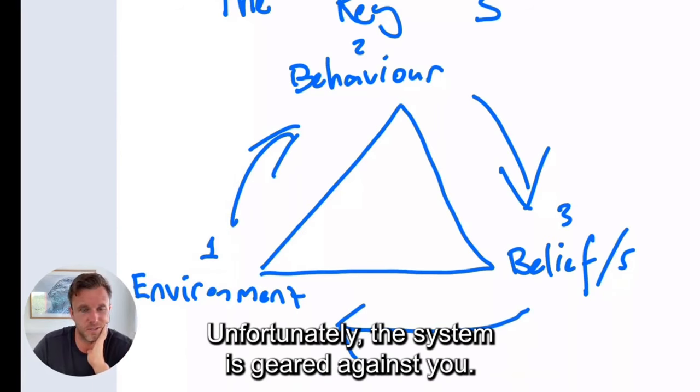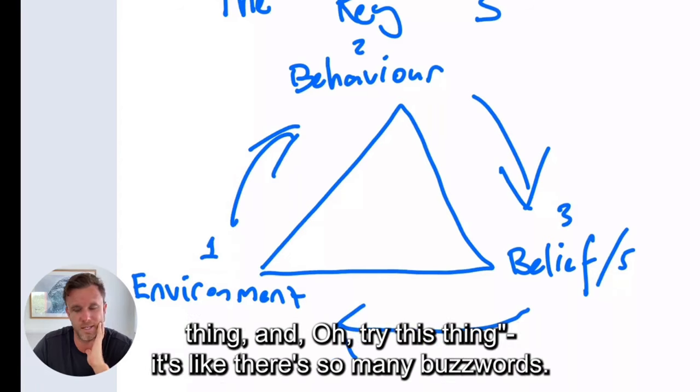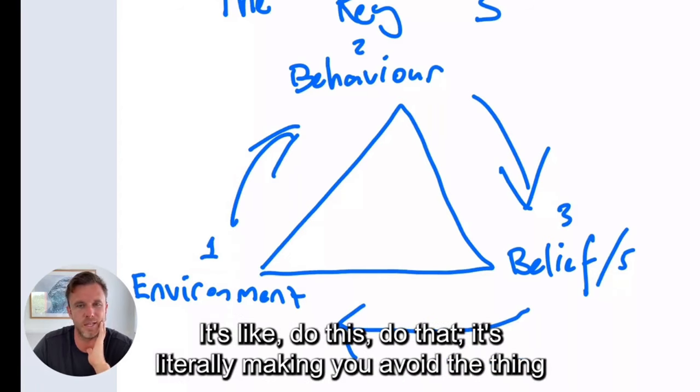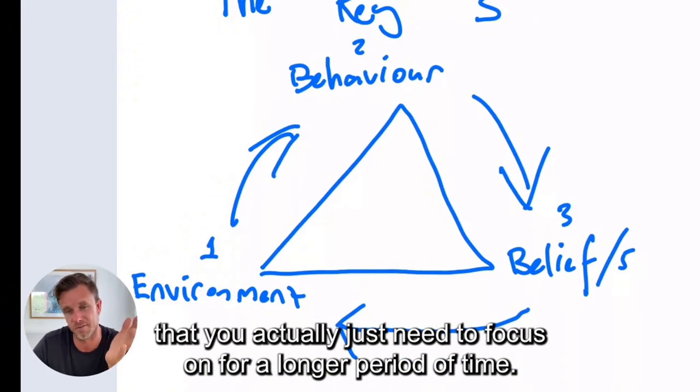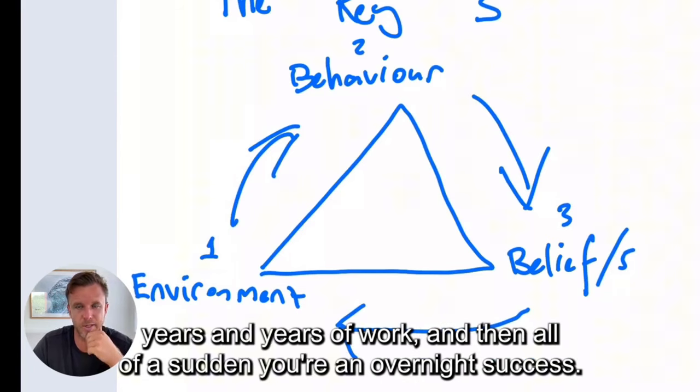Unfortunately, the system is geared against you. The system tells you, oh, just try this, and try this next quick thing. There's so many buzzwords. It's like, do this, do that. It's literally making you avoid the thing that you actually just need to focus on for a longer period of time. Everyone wants overnight success, but overnight success is usually years and years and years of work. And then all of a sudden, you're an overnight success.